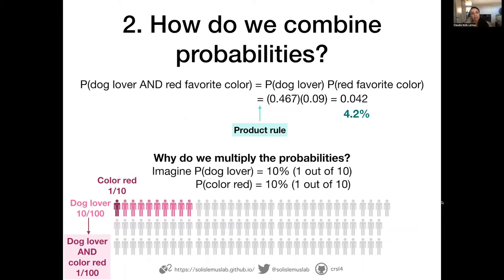Why do we multiply probabilities? If both probabilities are 10% — meaning 1 out of 10 — and I have 100 people, then 10 out of 100 will be dog lovers. Out of these 10, 1 out of 10 will have red as a favorite color. So when we combine both conditions, we have just one person out of 100. The product rule reduces the set of people that satisfy both conditions. That's why you multiply — you're making the probability smaller and smaller.